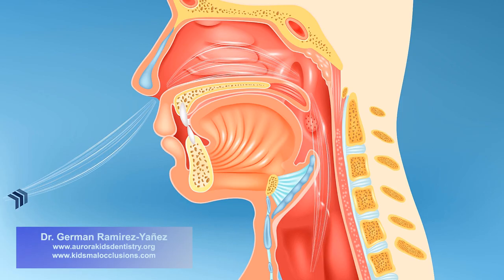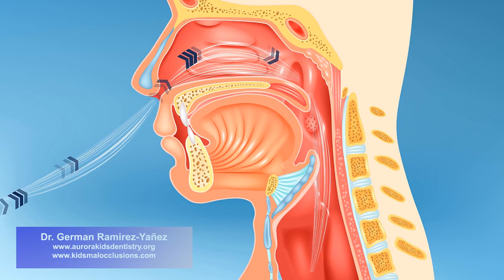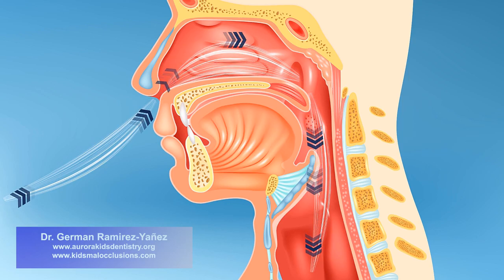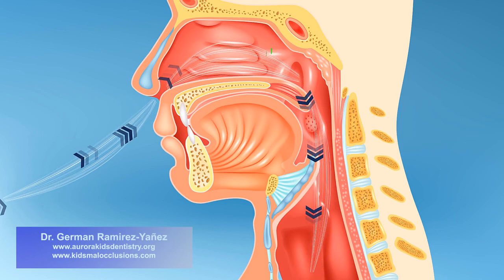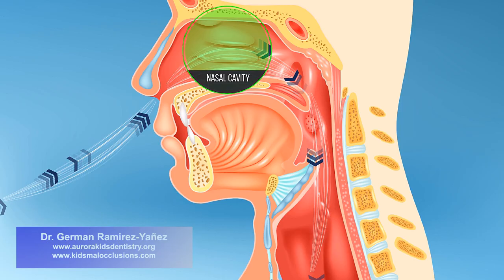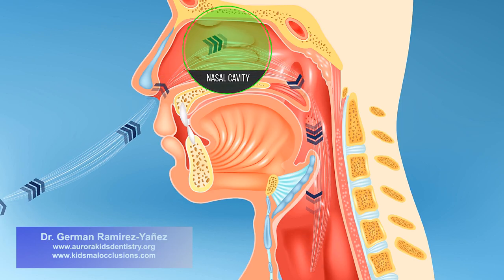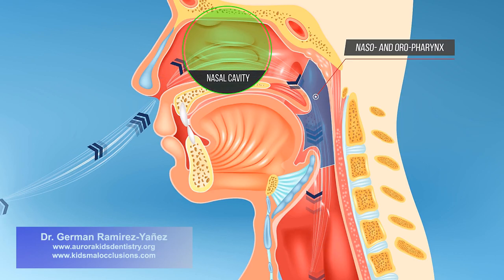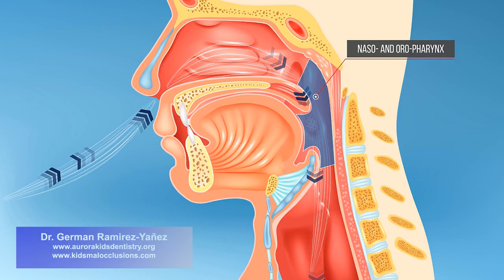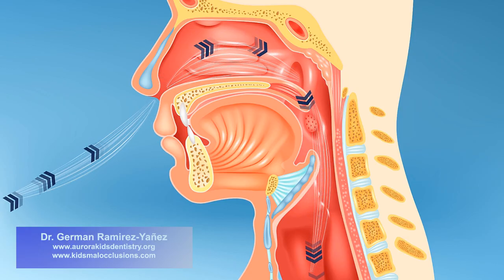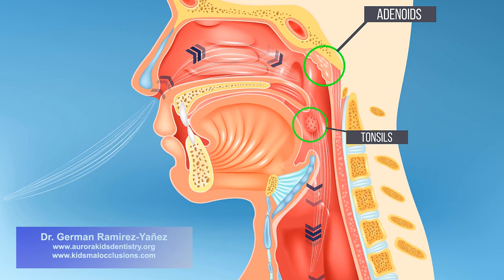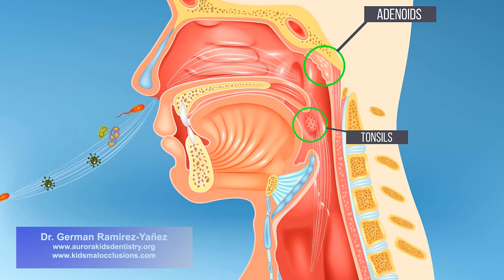The normal or physiological way of breathing is through your nose. Breathing through the nose permits purification of the air by the structures inside the nasal cavity. In that way, the air entering into your naso- and oropharynx, your throat, is not going to heavily affect the lymphoid tissue in the adenoids and tonsils, which is the last barrier to catch harmful particles in the air before it reaches your lungs.